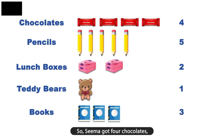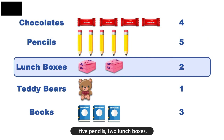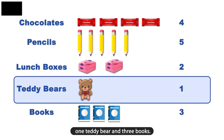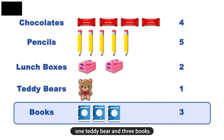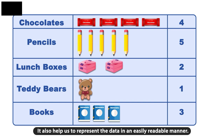So Seema got 4 chocolates, 5 pencils, 2 lunch boxes, 1 teddy bear and 3 books. Let us make a table of each gift to understand the data clearly. This is how data handling helps us to organize the data and represent it in an easily readable manner.